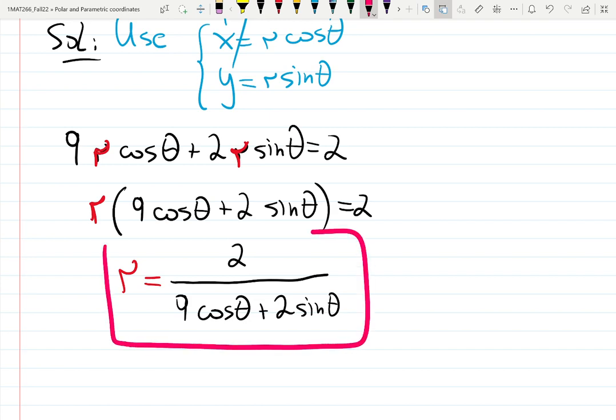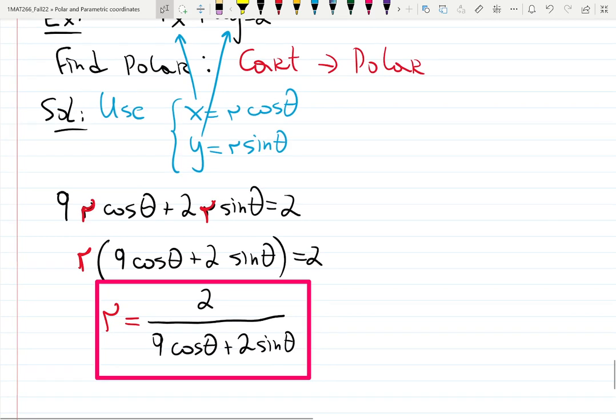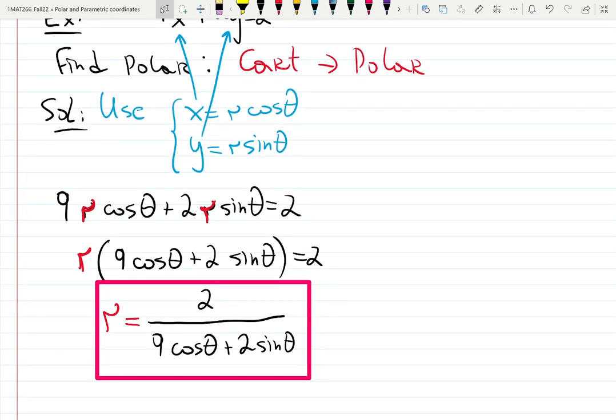As you remember, if in Cartesian we have usually the form Y equals blah, blah, blah, in Polar we have R equals blah, blah, blah. So that is kind of the same example, but we just reversed the process. Completely reversed the process.